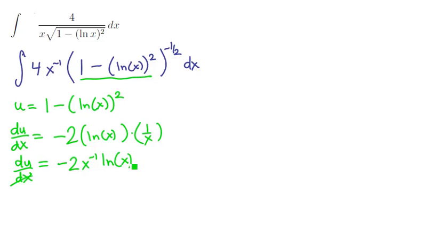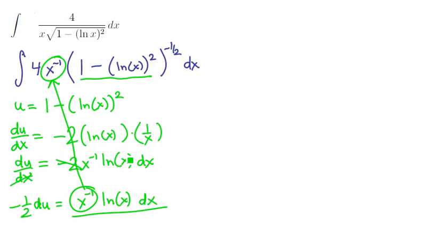We can multiply both sides by dx and divide both sides by negative 2 to get negative 1 half du is equal to x to the minus 1 times the natural logarithm of x times dx, and this is the differential to fit. x to the minus 1 fits here, dx fits here, but there's no ln of x by itself. What do we conclude? This substitution doesn't fit.